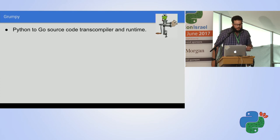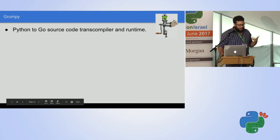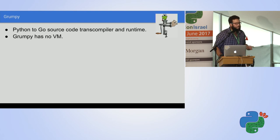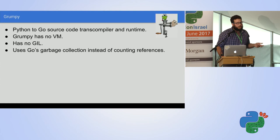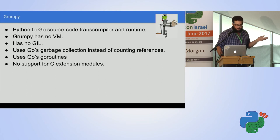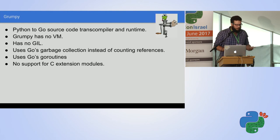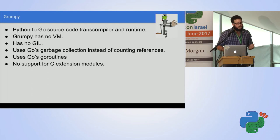So Grumpy was born. What is Grumpy? It is a source-to-source transpiler and runtime: it takes Python code and produces Go code. It has no VM, doesn't work with bytecode like CPython, has no GIL, uses Go's garbage collection and Go routines, and does not support C extensions. They gave us one blog post for developers and a Grumpy GitHub with a roadmap.